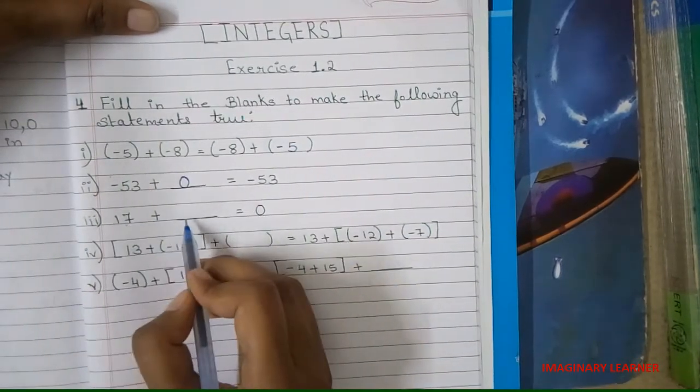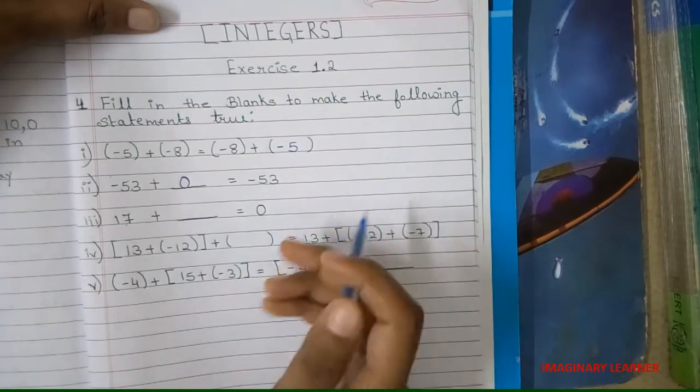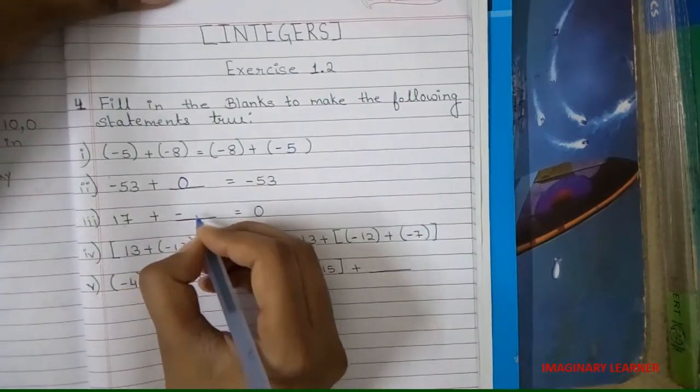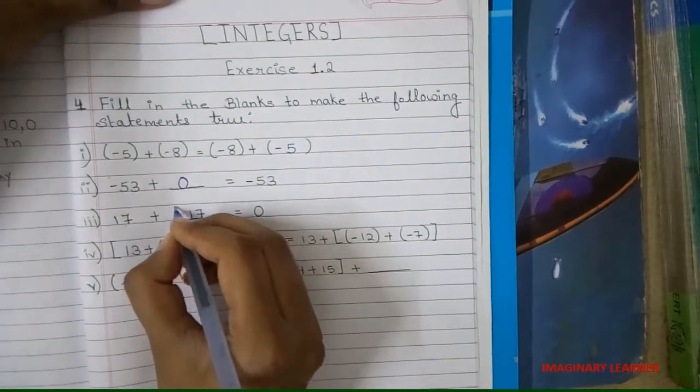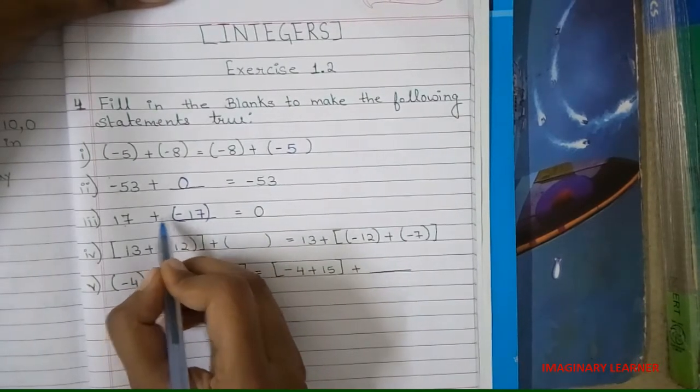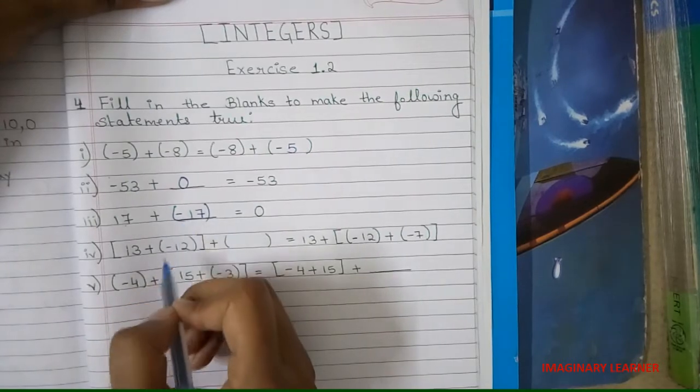Third: 17 plus which integer will give 0? So here if we add minus 17, we will get 0, because minus plus minus, and if we add 17, the answer will be 0.